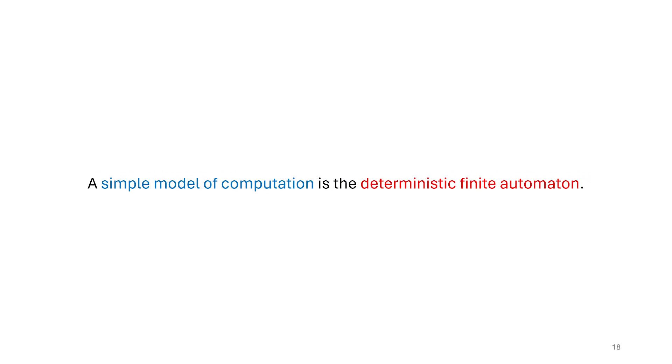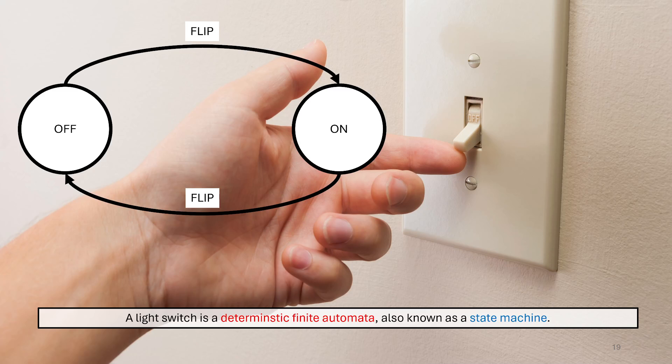So as I mentioned in this video, we're going to be talking about a simple model called the deterministic finite automata. And you're already familiar with them. So I'm going to give you a very simple example of that, which is going to be the light switch. The light switch has two states that it can be in. It can be on or off, at least the simplest light switch, the one depicted here. And the way you move it from one state to the other is you flip the switch.